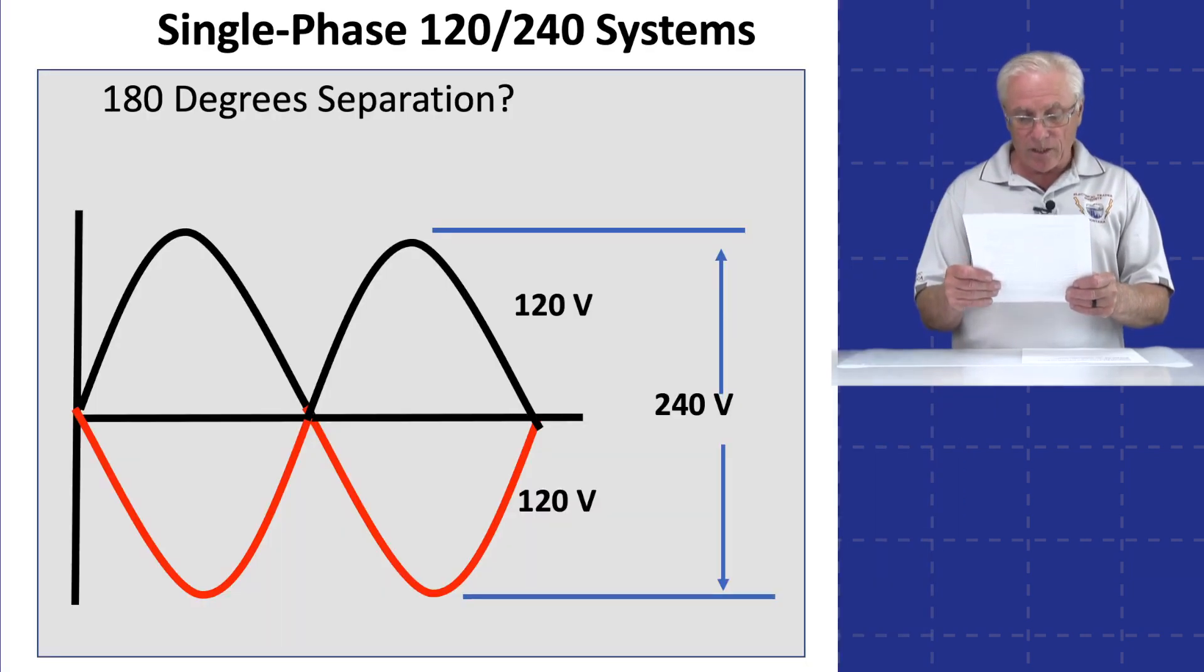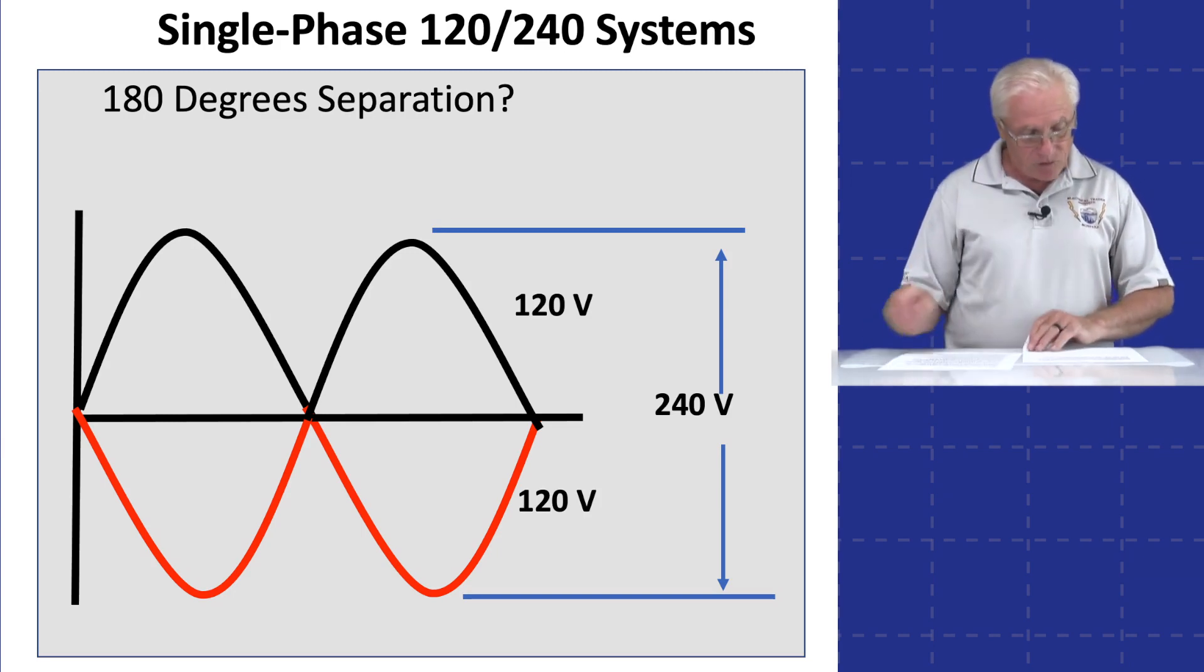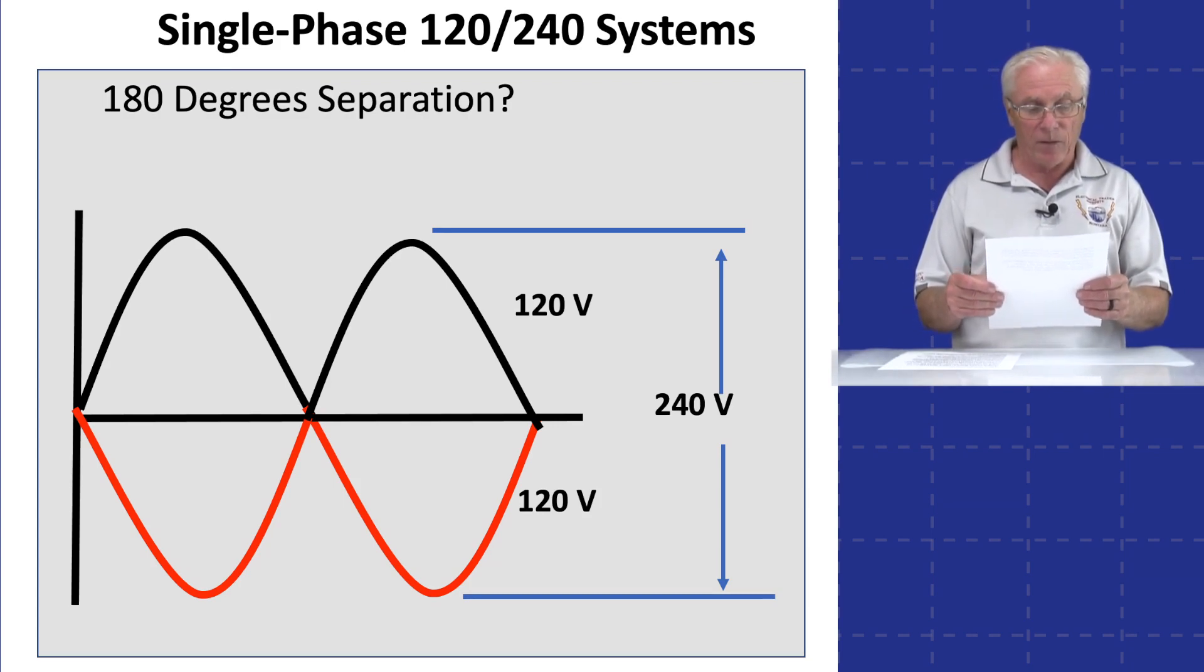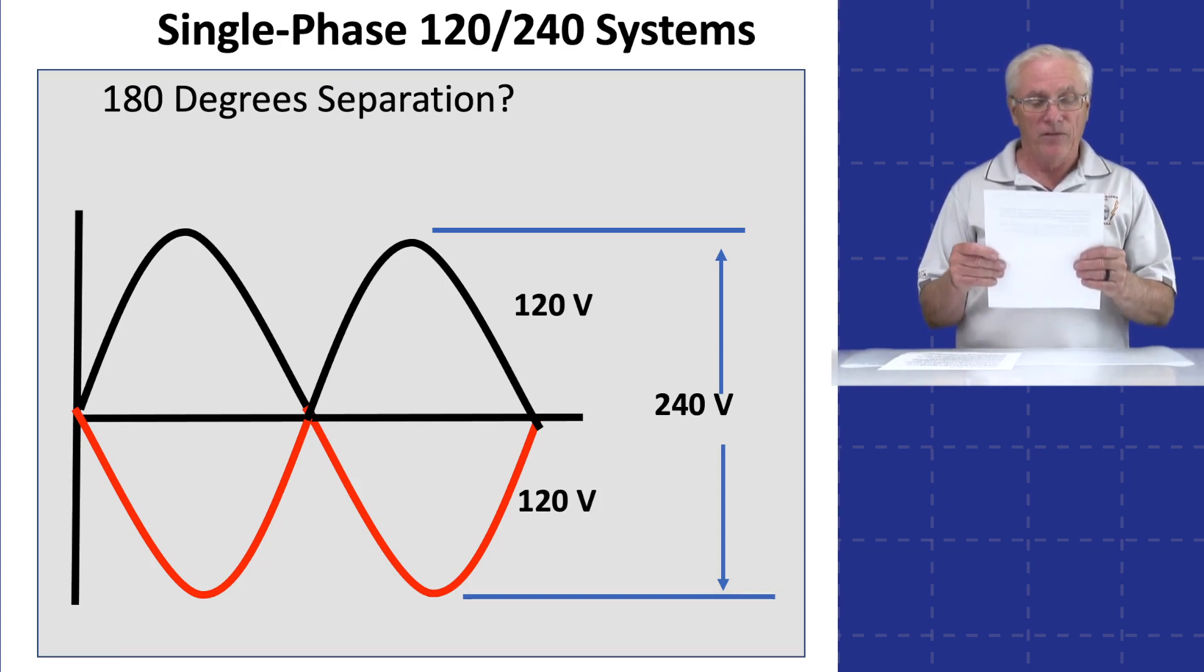However, it is important to note that the actual sine waves are not physically separated by 180 degrees in space. The representation of them being 180 degrees apart is a conceptual simplification used to illustrate their relative phase relationship. In reality, both sine waves exist simultaneously and they are combined to create the 240 volt potential difference between the two hot wires. The voltage between each hot wire and the neutral is 120 volts. So while the sine waves are depicted as being 180 degrees apart in the diagrams, it is important to understand that this is a conceptual representation of their phase relationship and not physical separation.